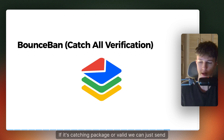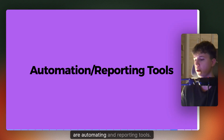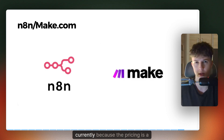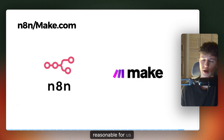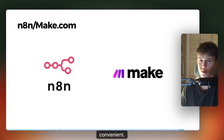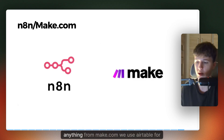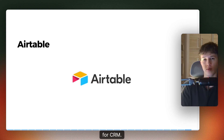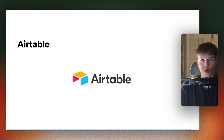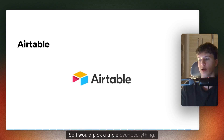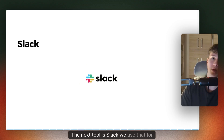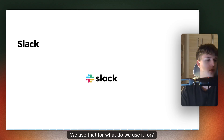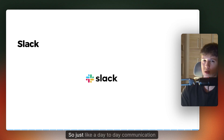The next tools are automation and reporting tools. We use N8N and Make. We are transferring a bunch of our stuff to N8N currently because the pricing is more reasonable and it has more capabilities — we find it just more convenient. So all of our automations are transferring to N8N from Make.com. We use Airtable for storing our data and for inbox management. For CRM, we use Airtable for everything because I love the capabilities of how you can customize it — I would pick Airtable over everything. We use Slack for weekly reporting, client communication, interested lead automations, and day-to-day communication.